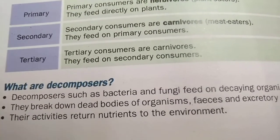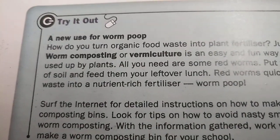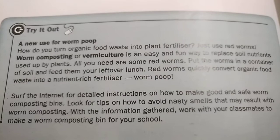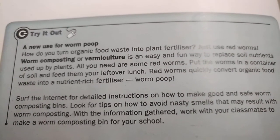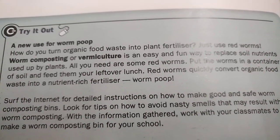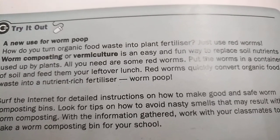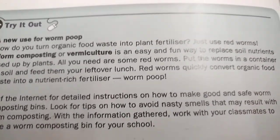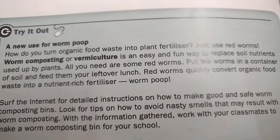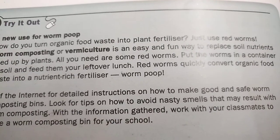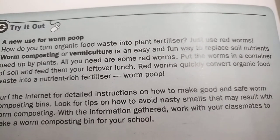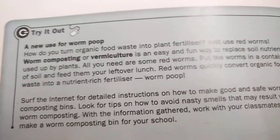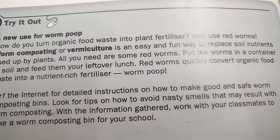Decomposers return nutrients to the environment. Here's a new use for worm poo — how do you turn organic food waste into plant fertilizer? Just use red worms. Worm composting, or vermiculture, is a technique by which we use worms to make the soil rich in fertilizers. Put the worms in a container of soil and feed them your leftover fruit and vegetable peels. Red worms quickly convert organic food waste into a nutrient-rich fertilizer — worm poo!